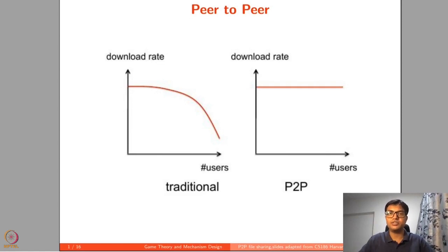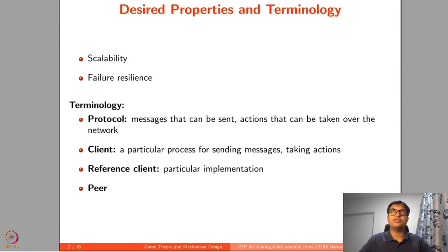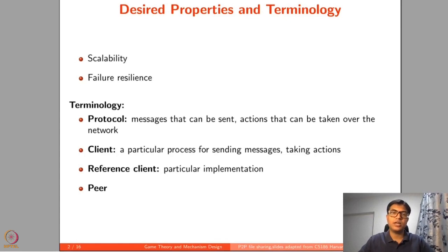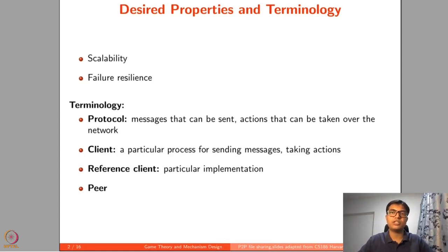That is one of the advantages of using peer-to-peer, and it is being used in various applications. The advantage of peer-to-peer file sharing is that if the number of users increases, it also increases the number of servers, making it scalable — the download rate is not seriously affected even when many users are downloading files. It is also failure resilient. Imagine a situation where there was only one server and that server goes down; nobody can download the file. In peer-to-peer sharing, every user has some copy, so even if some peers disappear, other users can still download from remaining peers.